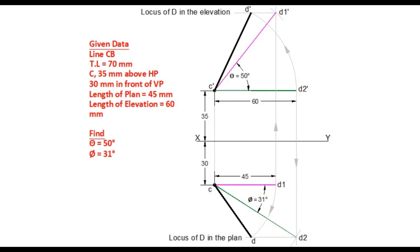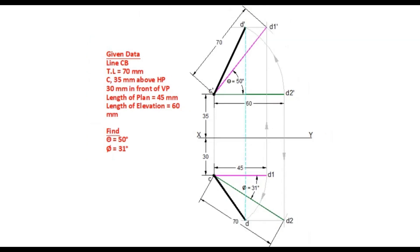To check the correctness of the projections, draw a vertical line through D — it will also pass through D dash.